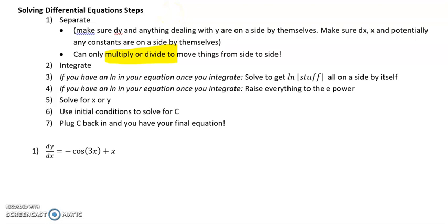Next thing you'll do is you'll integrate. You all know plenty of calculus, so you know how to integrate. Steps three and four are just for some cases, not all cases. If you have an ln in your equation once you integrate, you're going to need to solve to get the ln of whatever it is all on a side by itself. And then for step four, to get rid of the ln, you can do e to the ln to cancel out the ln.